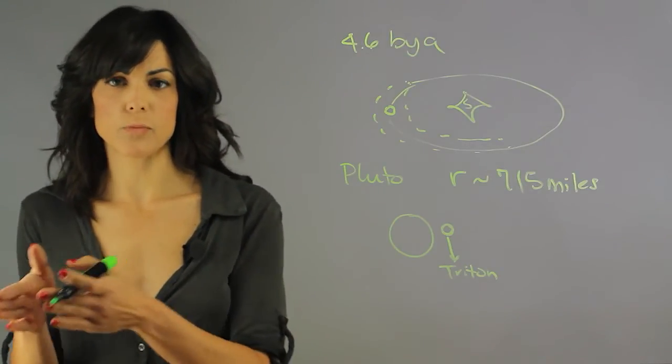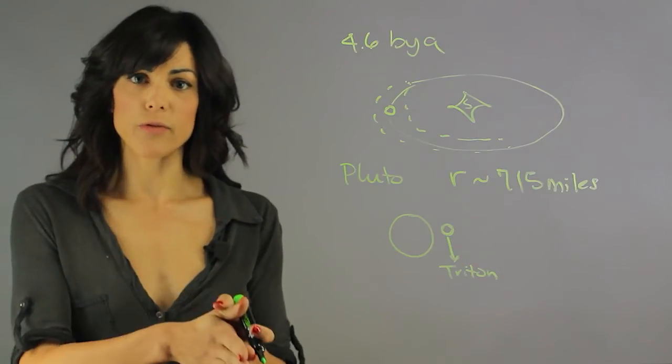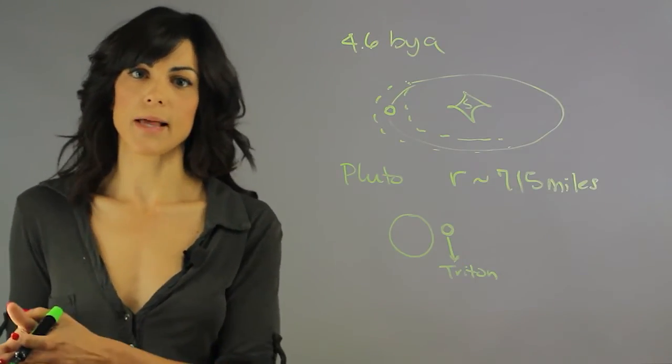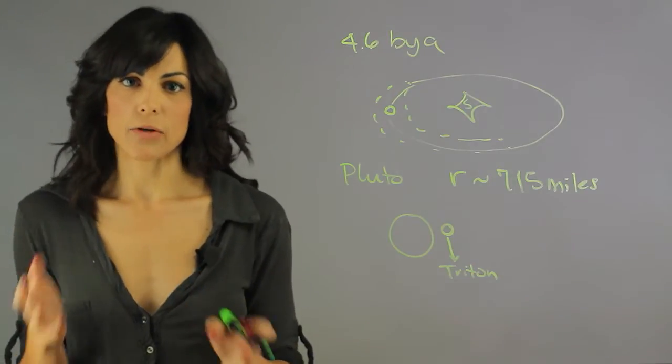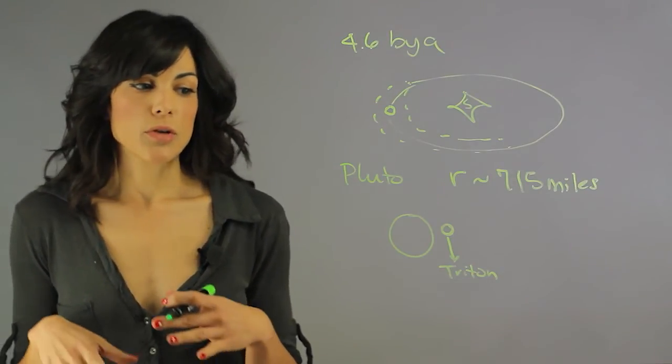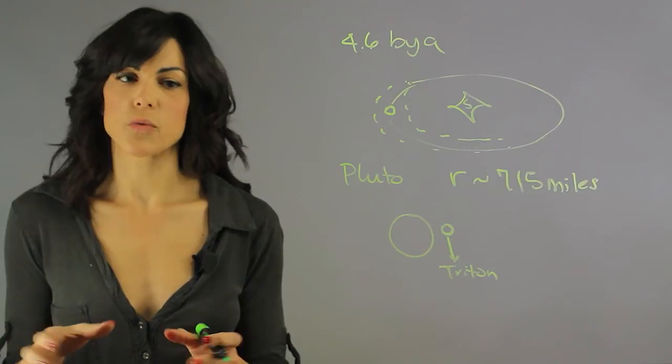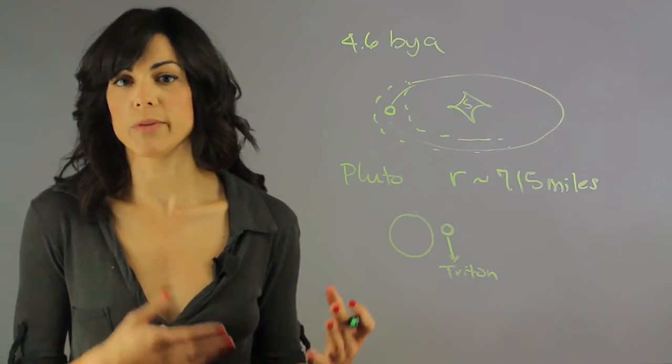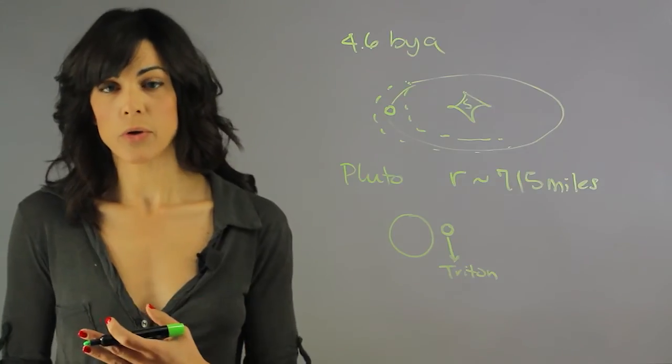Sometimes Pluto gets in front of Neptune. Like when Pluto was a planet, it actually alternated between being the ninth planet to the eighth planet and it goes back and forth because the orbit is so strange. We believe that it might have been one of the largest moons of Neptune and it just got kicked out of Neptune.